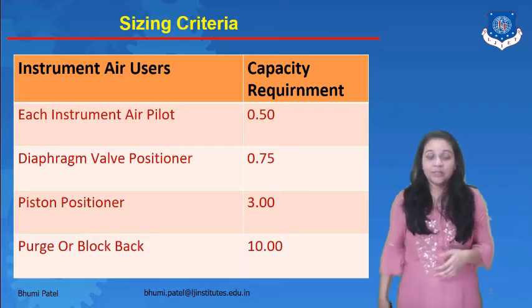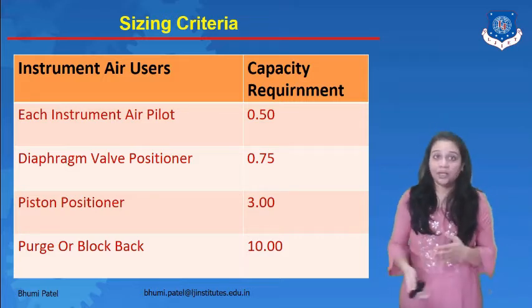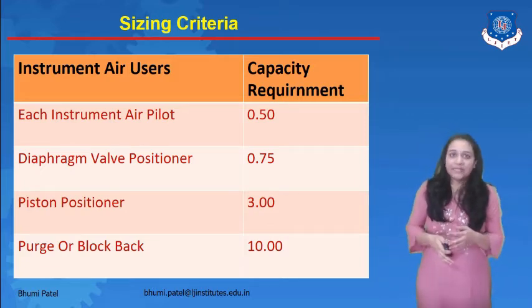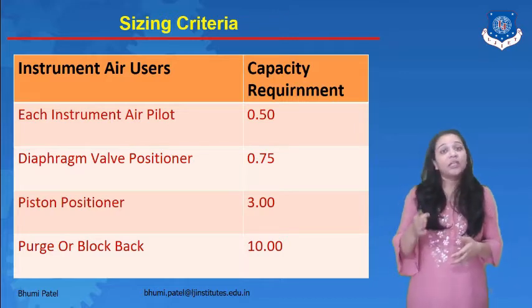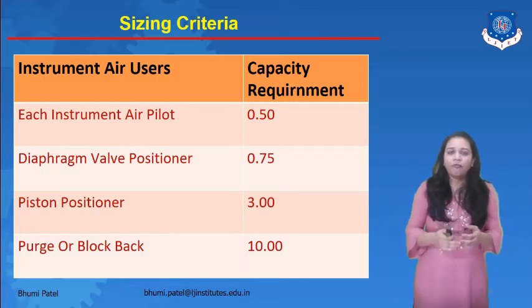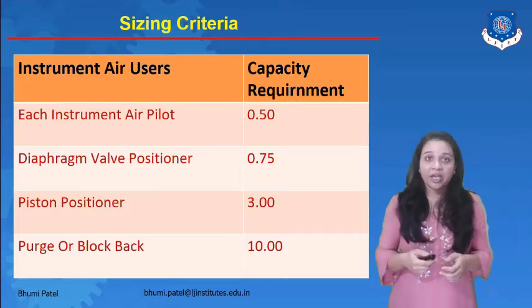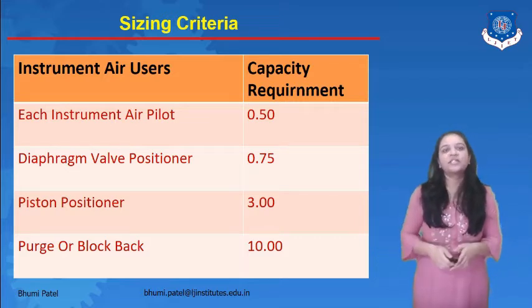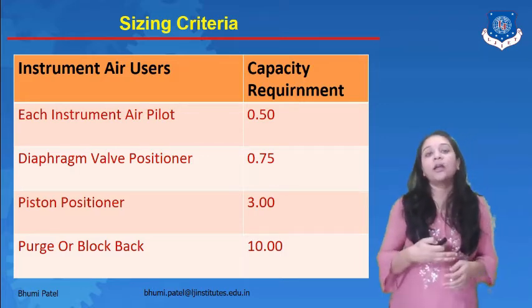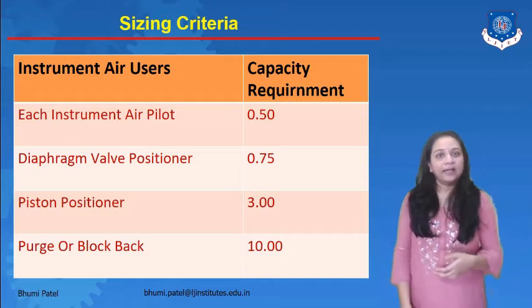For a piston positioner, generally used in mechanical systems where a cylinder and piston mechanism is employed, the capacity requirement is 3.00. If there is a purge or blowback system with multiple pipe connections in the same instrument system, the capacity requirement for that instrument air user is 10.00. So depending upon the application, system, and connections, different capacity values are required for the sizing criteria.